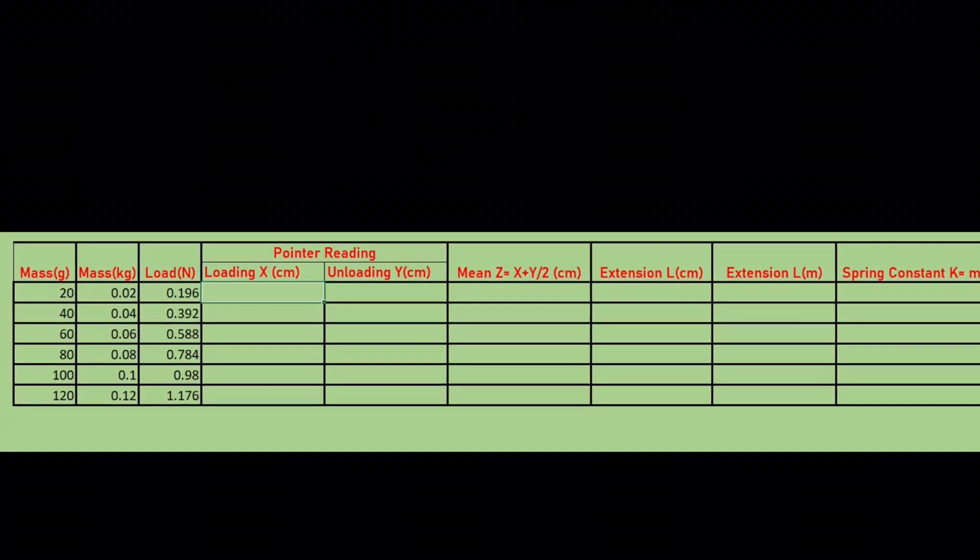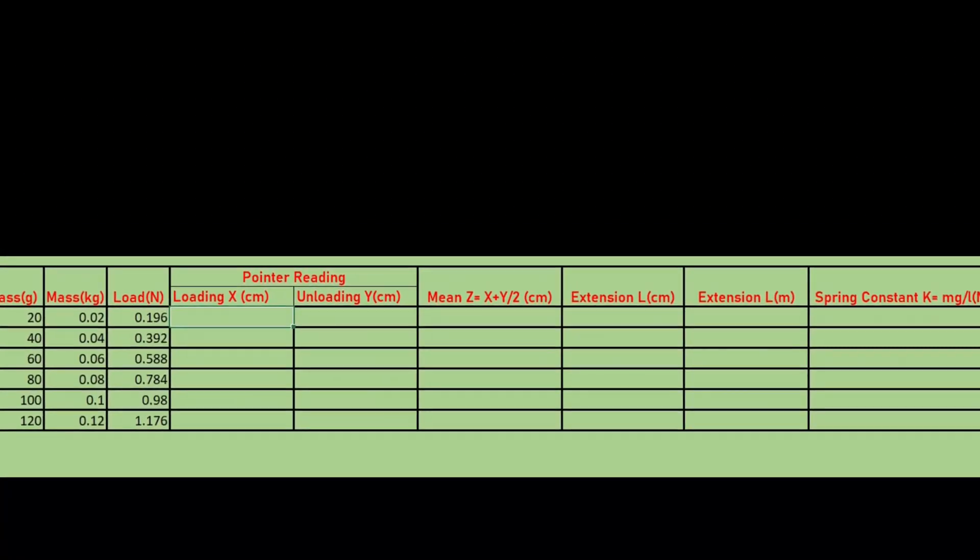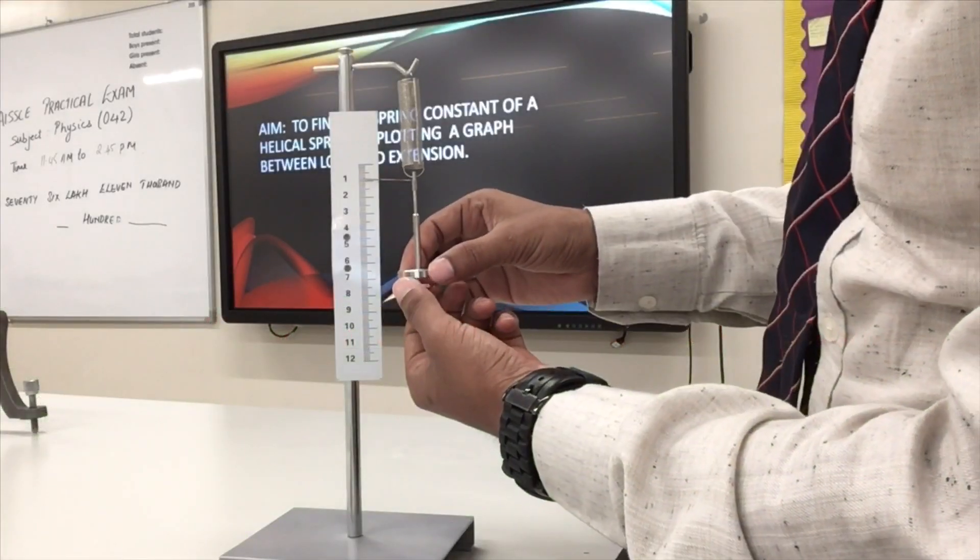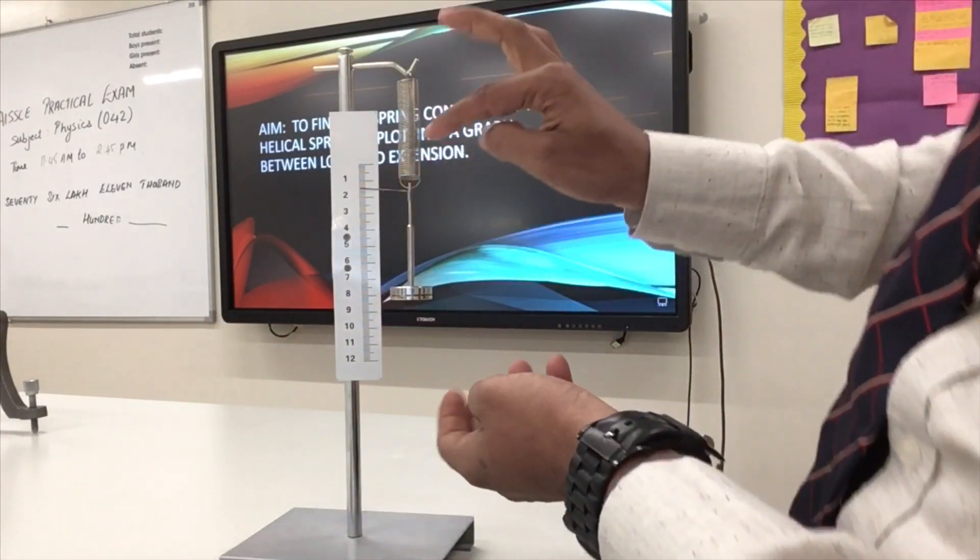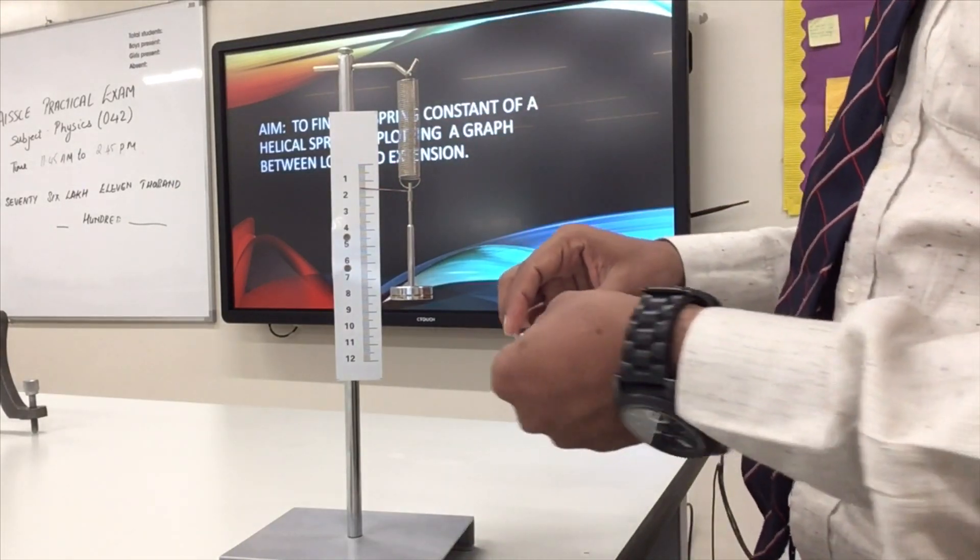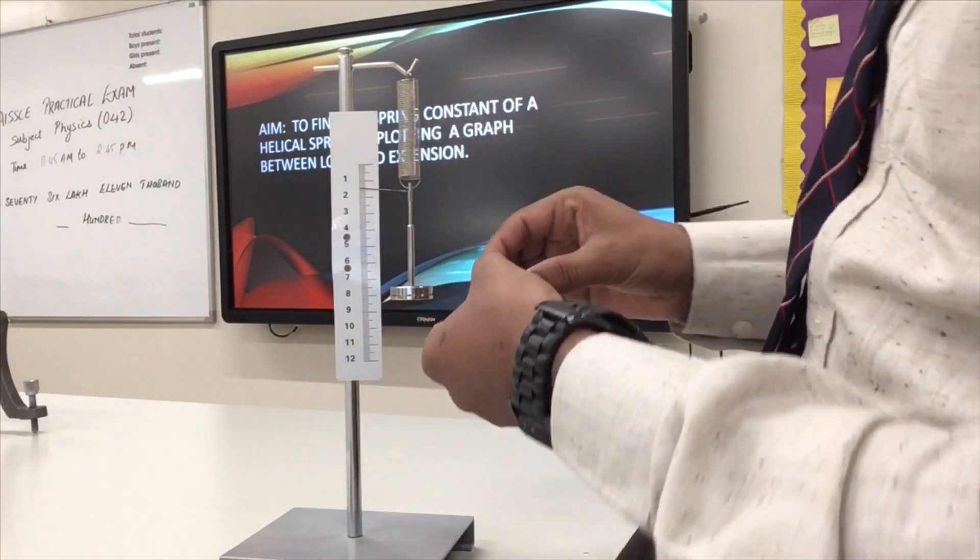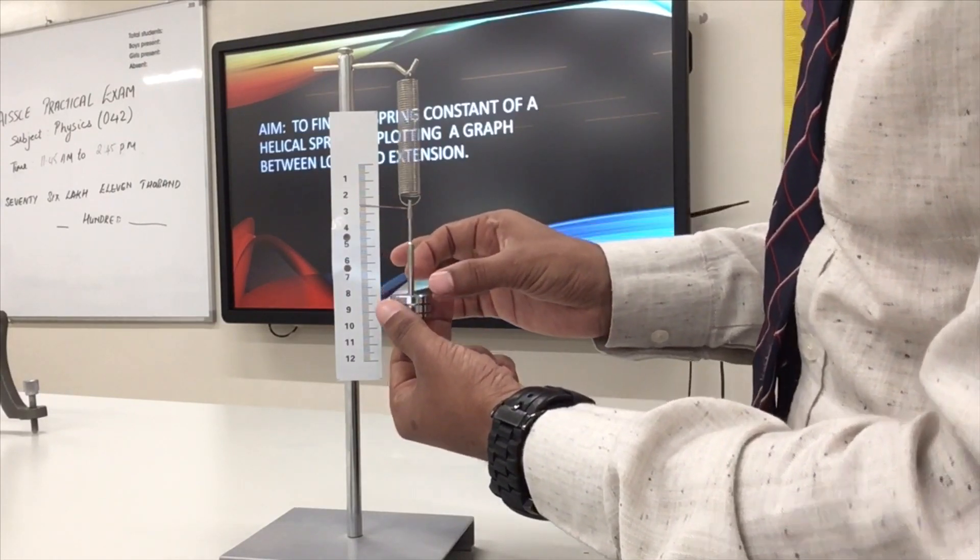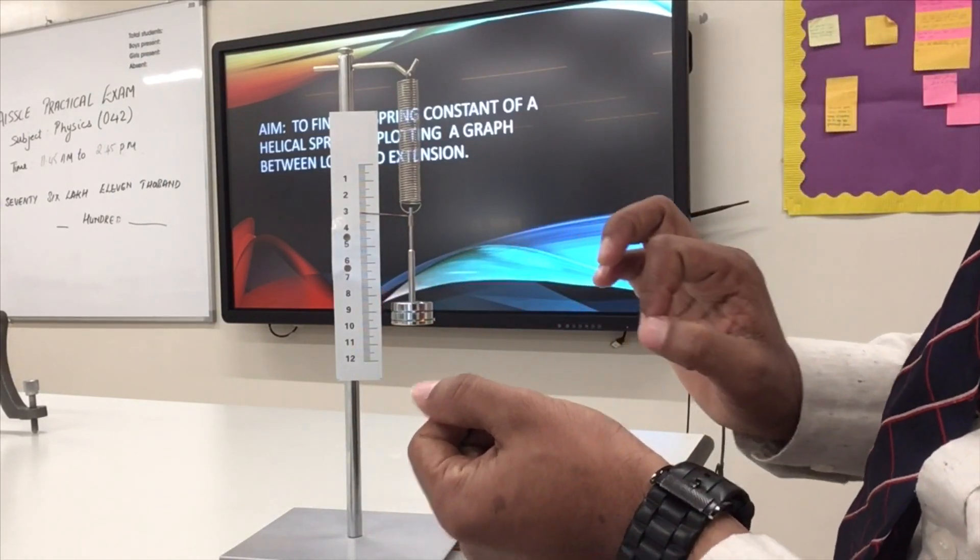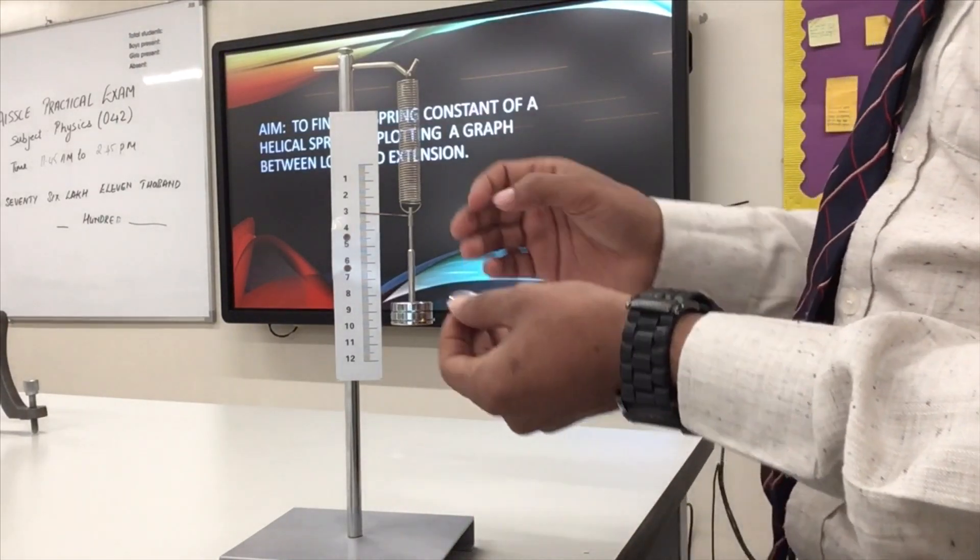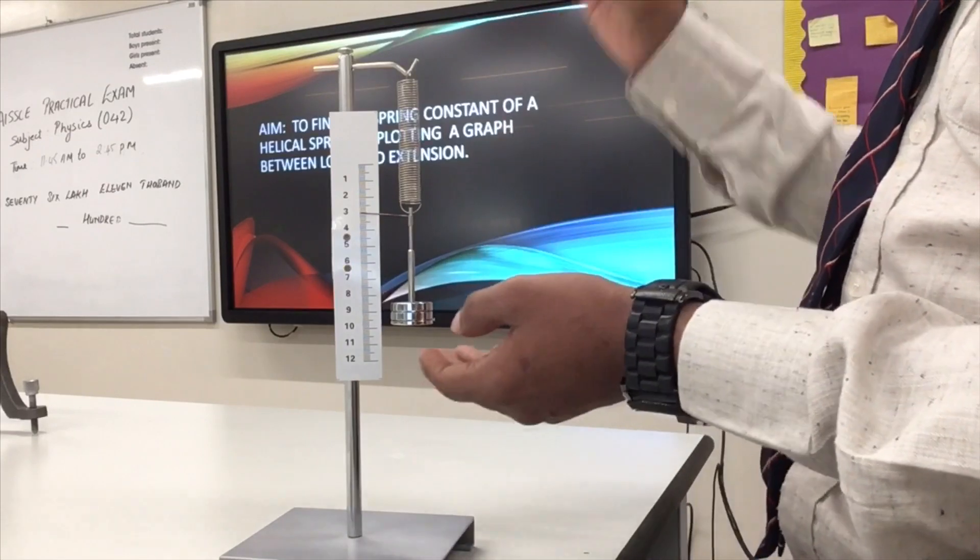After adding, so I added 20 grams here and I can see the readings. The reading shows 1.5 centimeters difference, so the elongation is 1.5 centimeter. Let's add 20 more grams and it shows 3 centimeter which is really good. So the loading I'm recording into the table.